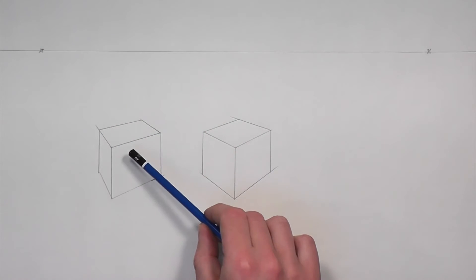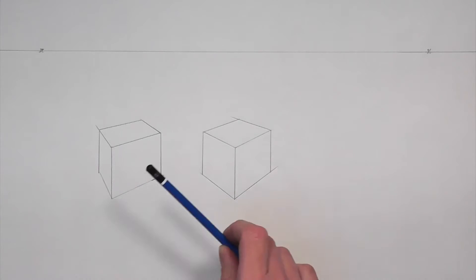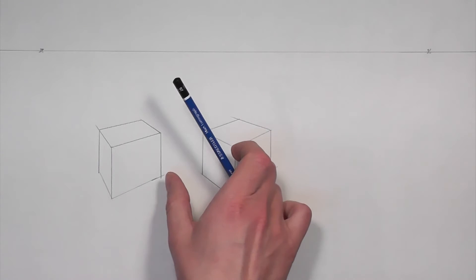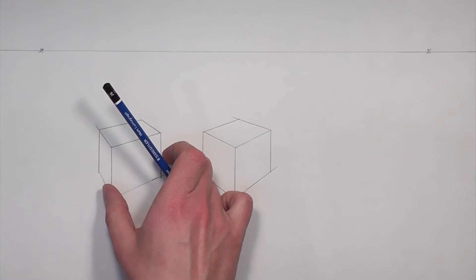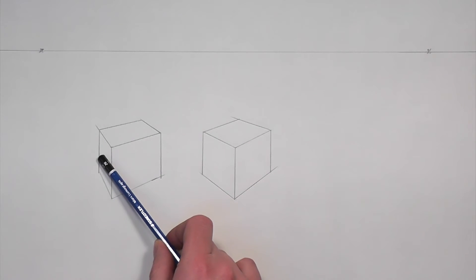You'll notice that I'm showing more of this side and less of that side. This makes sense because as a box moves towards the left side of our field of vision, we see more of this side and we see less of that side.